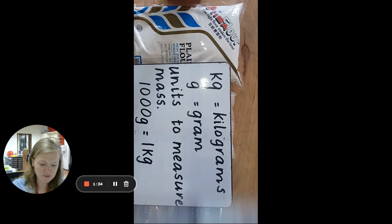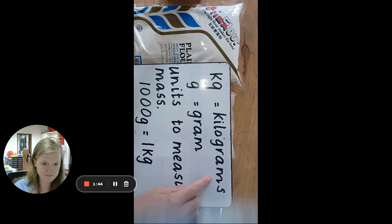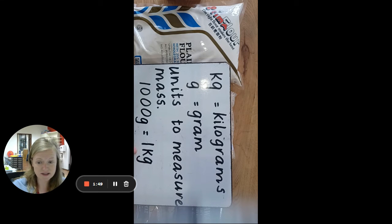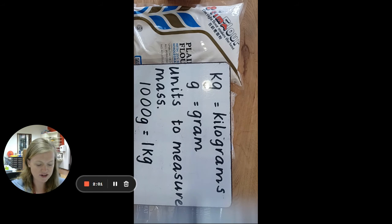Last week we learned all about the g for grams. Both of these are units to measure mass, or the weight of something. Grams are for light objects, and kilograms are for things that are much heavier, because one kilogram is the same as 1000 grams. So grams are small and light, and kilograms weigh heavier things.